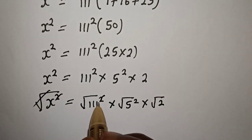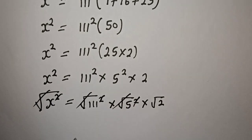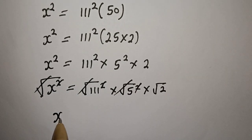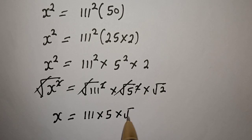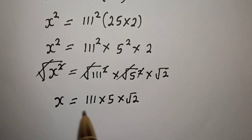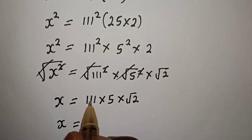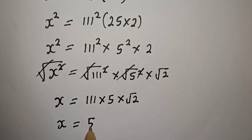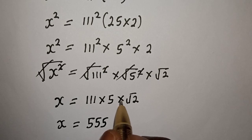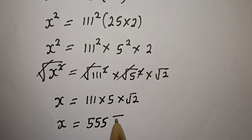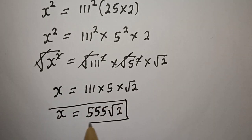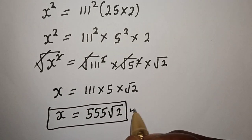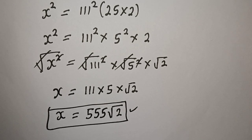This will cancel with this, and this will cancel with this. So s is equal to 111 multiplied by 5 multiplied by root 2. Then s is equal to 111 multiplied by 5, which is 555, and multiplied by root 2 — so s equals 555 root 2. This is the final answer. If you enjoyed the class, please don't forget to like, share, comment, and subscribe. Bye bye.